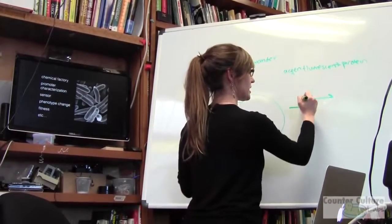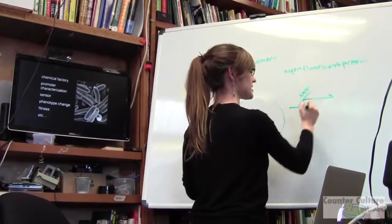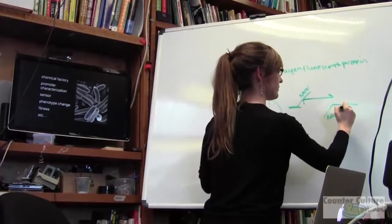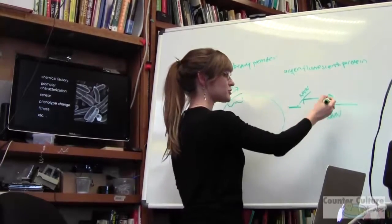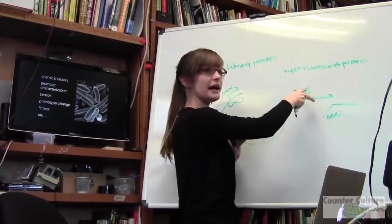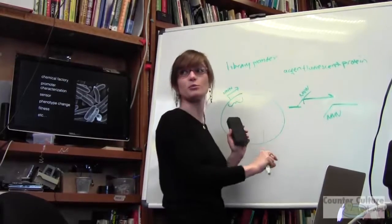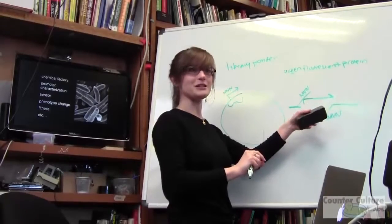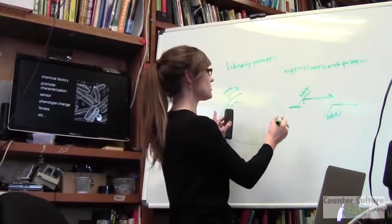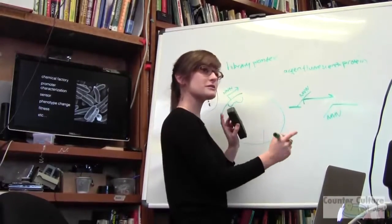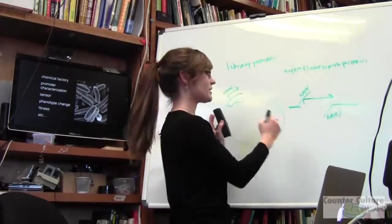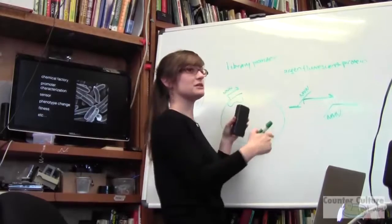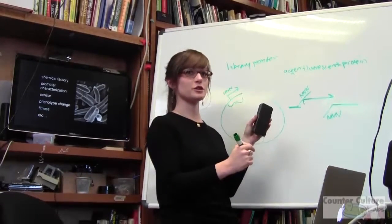If you had a primer that bound your promoter region and had randomized nucleotides coming off of the end and bound to your vector, you could amplify the entire vector and put random sequences where the promoter region is. Or you can order oligos with randomized regions in them, anneal them, and drop them into this region using restriction enzyme digest. There are various ways to make this happen.